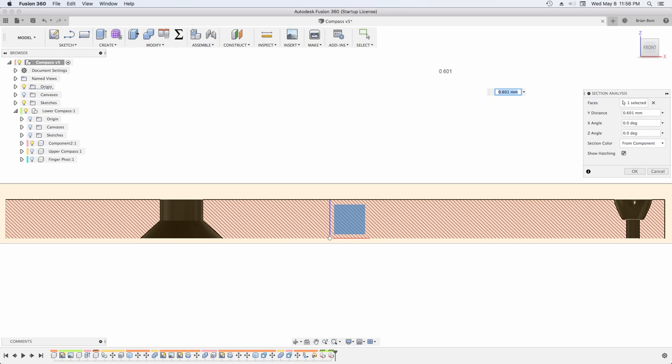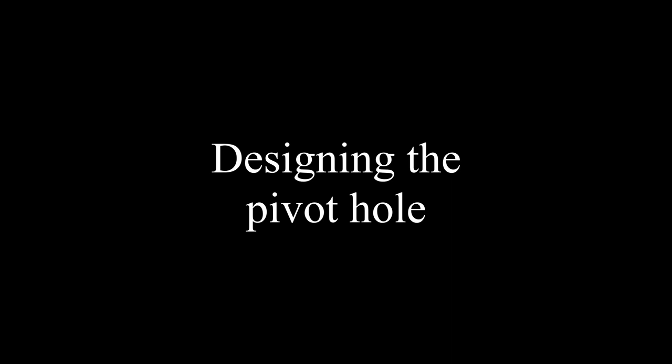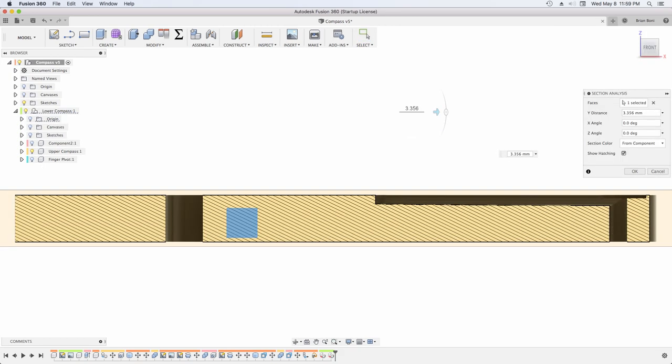The countersunk hole goes in the lower portion of the compass. The pivot point is a finishing nail that I sharpened on a grinder and then bent in a vise. The length of the nail will sit in the slot on the upper leg. Later a soldering iron will be used to melt plastic over the nail locking it in place.